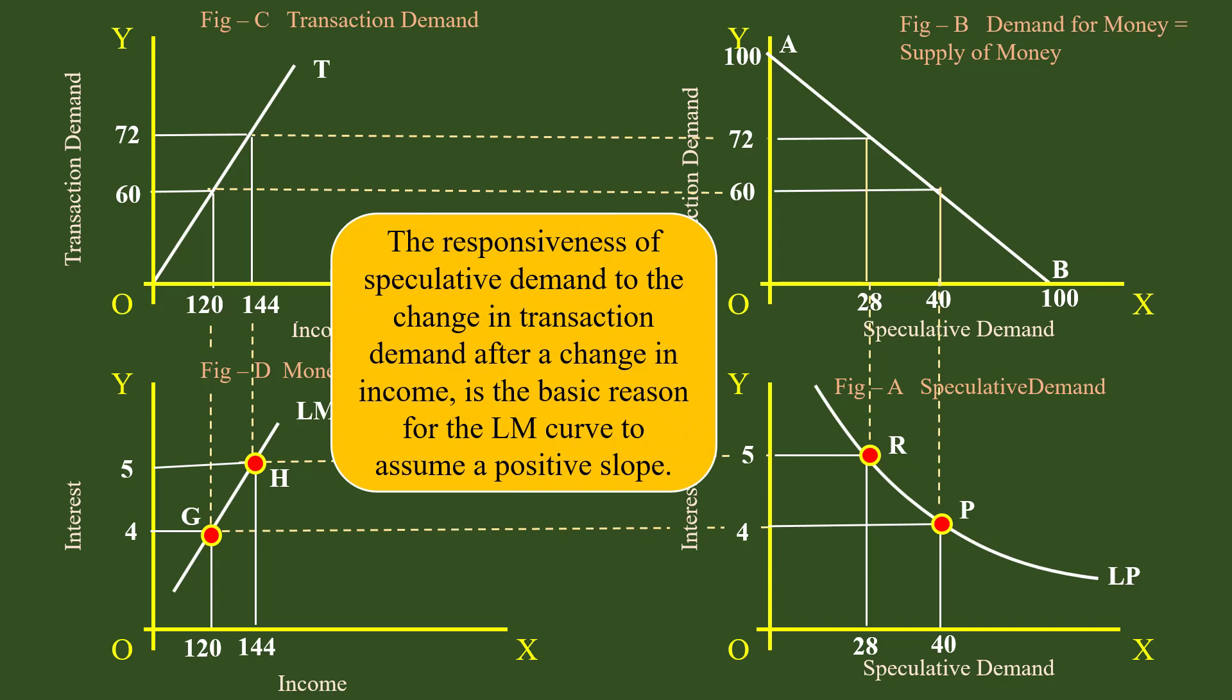What is the reason for LM curve to slope upward? The responsiveness of speculative demand to the change in transaction demand after a change in the income is the basic reason for LM curve to assume a positive slope.